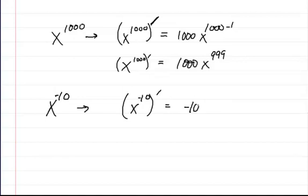Bring down the negative 10. Oh, not equal, sorry. And then you're going to put the x down. You have minus 10 minus 1. So this is going to be equal to negative 10x to the negative 11th power. And that's how you do that.